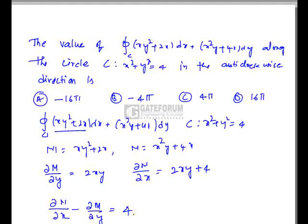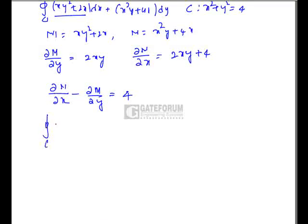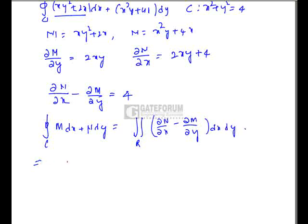Now, let us use Green's theorem to solve this problem. What does Green's theorem say? Integral over C M dx + N dy can be written as double integral over the region (∂N/∂x - ∂M/∂y) dx dy. This is nothing but, if I take y = 0, the values of x will be -2 to +2. And the value of y will be -√(4-x²) to √(4-x²) into (∂N/∂x - ∂M/∂y) is nothing but 4 dx dy.